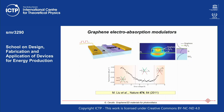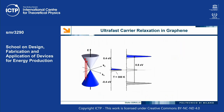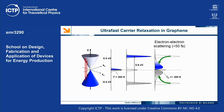My main specialty is looking at the ultrafast optical response of materials. Graphene has an extremely fast optical response. When you promote electrons from the valence to the conduction band with a short light pulse, you suddenly bring these electrons up — you have electrons in the conduction band and holes left in the valence band. This is not an equilibrium, not a Fermi-Dirac distribution.